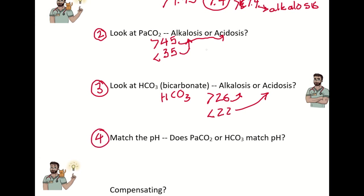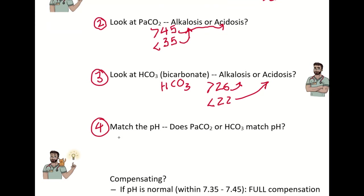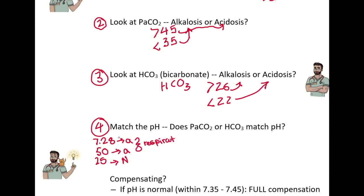Step four: once you have all those values, you need to match the pH to either the PaCO2 or the HCO3. For example, if you get a pH of 7.28, a PaCO2 of 50, and a bicarb of 25 — the pH is less than 7.35 (acid), the PaCO2 is greater than 45 (acid), and the bicarb is normal. Because the pH and the PaCO2 match, you know this person is in a respiratory state.